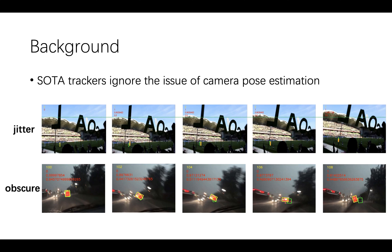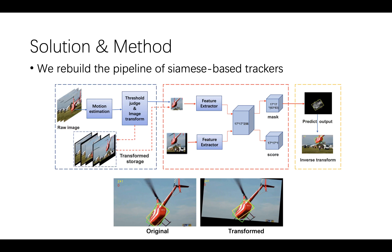The yellow bounding box and the red mask show the result of the SOTA tracker SiamMask. When tracking a similar scenario in actual use, the performance of robustness may not be to our satisfaction. To deal with such situations, we rebuilt a pipeline for Siamese-based trackers and named it iSIM.